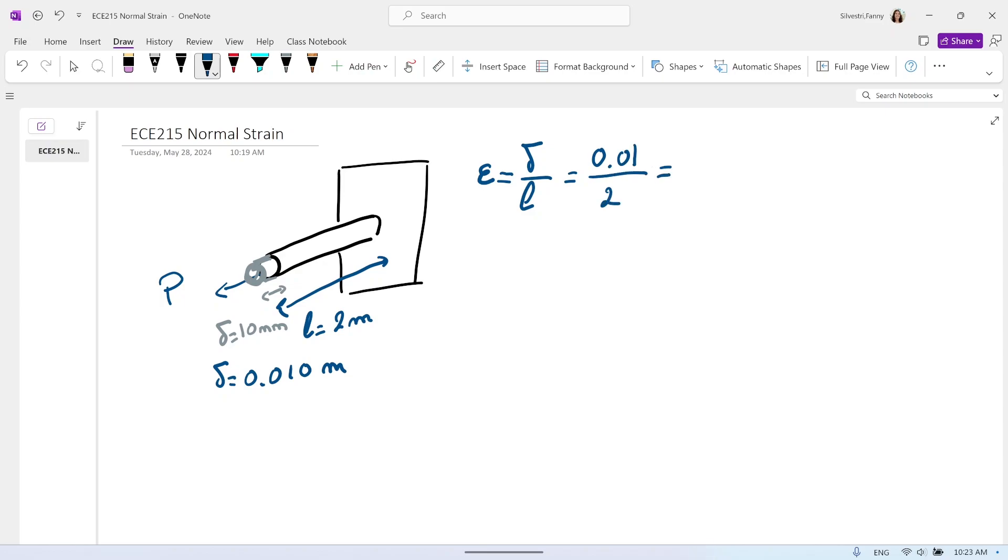So 0.01 divided by 2, and this is equal to 0.005. So there's no dimensions. You can also see it in percentage. Move the decimal two to the right, so that will be 0.5 percent. Usually the strain, normal strain, is small.